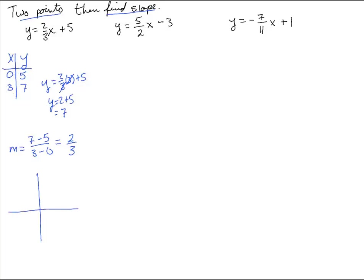So if we were to graph this, we have the point zero, five up here. And then three, seven is over three and up to seven — about right there. We can see that between these two points is the slope. You can actually see the two and the three: it went from level five to level seven — that's up two — and from zero over to three. So it went up two and over three to the next point.